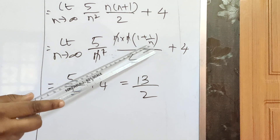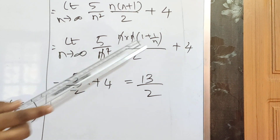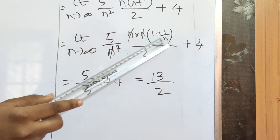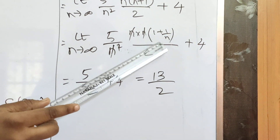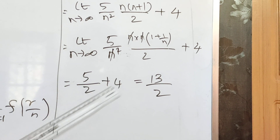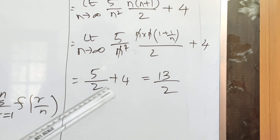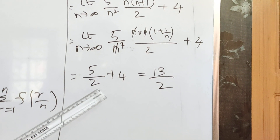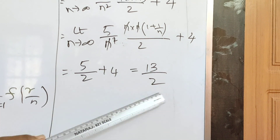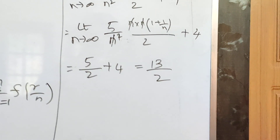Applying the limit as n tends to infinity, 1 by infinity = 0, so 1 plus 0 = 1. So 1 into 5 gives 5 by 2, plus 4. Cross multiplication with LCM 2: 2 fours are 8, 8 plus 5 = 13 by 2. The final answer is 13 by 2.